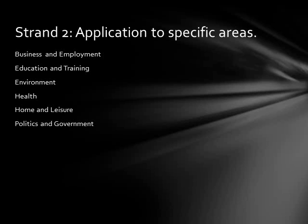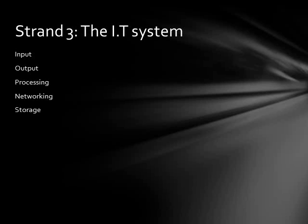Strand two is the application to specific areas, or specific scenarios. These are basically different categories that a situation can fall into: business and employment, education and training, environment, health, home and leisure, and politics and government — broadly defined categories meant to narrow down the usage of certain systems. Strand three talks about the IT system itself: input, output, processing, networking, and storage. These are where you discuss the actual technical components and how they relate to the social or ethical issue. Input is how the user interacts — keyboard, voice, any input device. Output could be a monitor or other output device. Processing covers computer processors and how they handle data. Networking covers whether the system is compatible with a network like the internet. Storage covers memory and how the system holds its data.